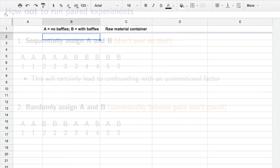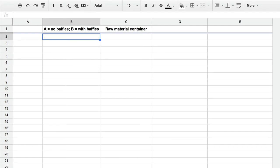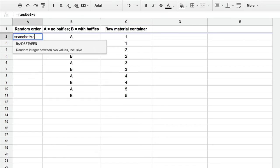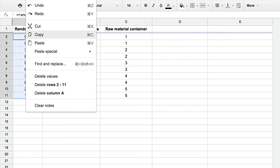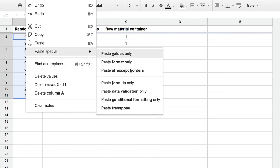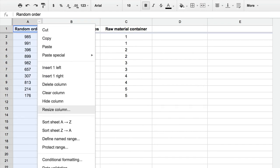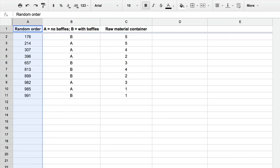In a spreadsheet, create a column with the thing you are testing. No baffles versus baffles in this case. Then add a column for the common element between your runs. In this case, it is the raw material from a particular container. In which order should we run these experiments? Create a column of random numbers between any low number and a high number, and then paste them as values. That's so the spreadsheet doesn't keep changing these random numbers. Sort your spreadsheet based on the random column from low to high.